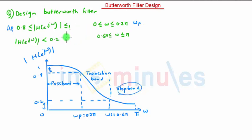So again this is AS and this is also omega S. Thus we have found out that AP is equal to 0.8, omega P is equal to 0.2 pi, AS is equal to 0.2 and omega S is equal to 0.6 pi.